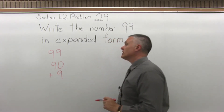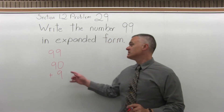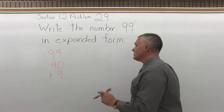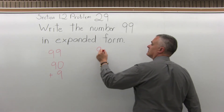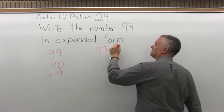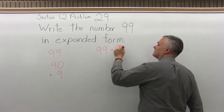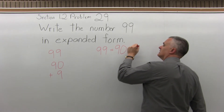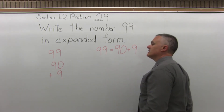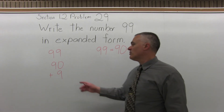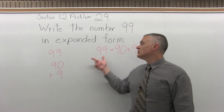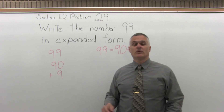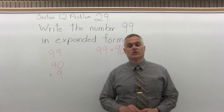For a smaller number you can either write the expanded form vertically or you could write it horizontally. As the numbers get bigger and bigger I'm more inclined to write them out vertically. But small to medium you could write really in either form, horizontal or vertical.